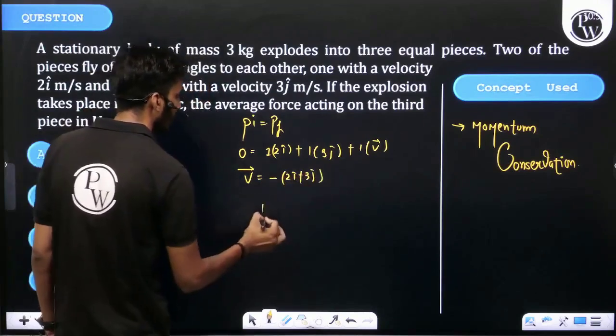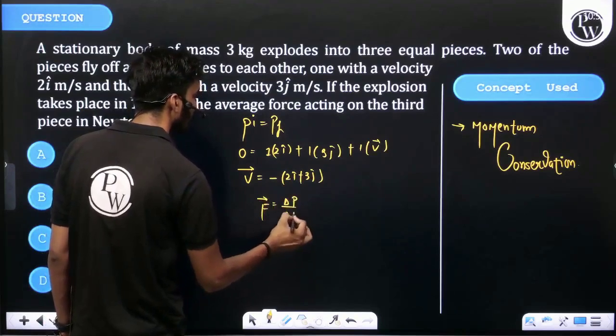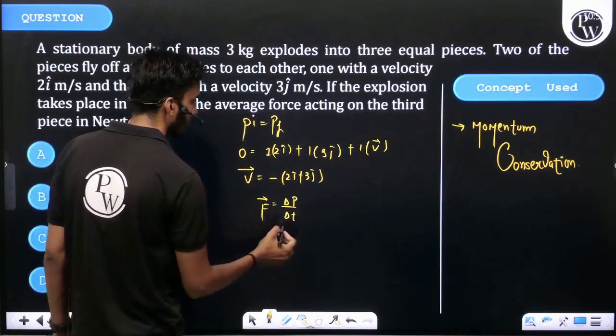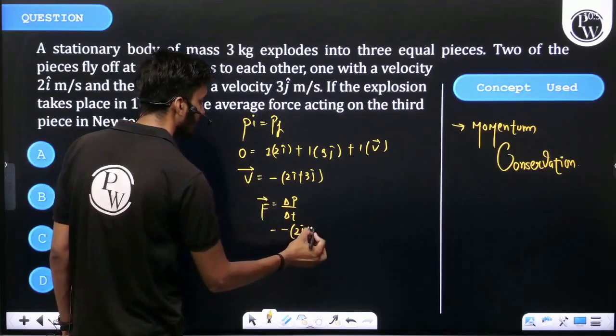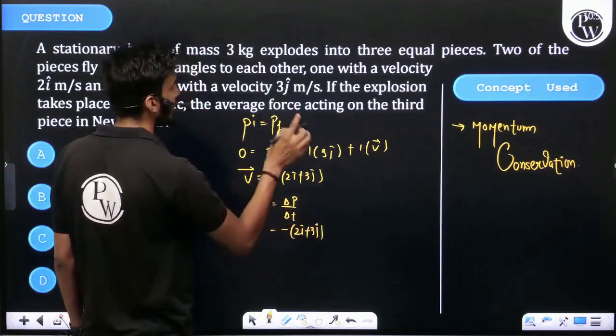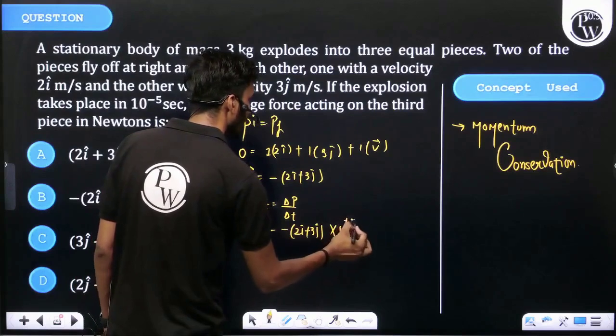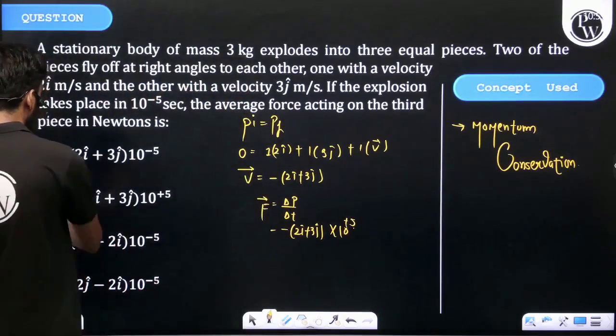We know that force equals change in momentum over time. Initial momentum is 0, and final momentum is mass times velocity: 1 kg times (-2i cap + 3j cap) divided by 10^-5 seconds, which gives 10^5. Let's match the options - option B is correct.